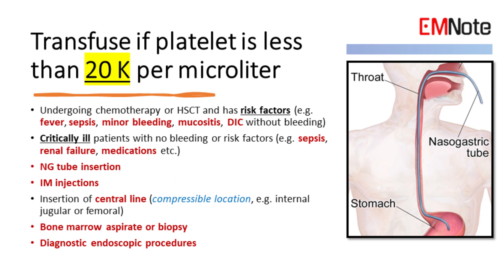Transfuse if platelet count is below 20,000 per microliter. This applies to patients undergoing chemotherapy or stem cell transplantation who have risk factors such as fever, sepsis, minor bleeding, or DIC without bleeding. Also for critically ill patients without bleeding or risk factors such as sepsis, renal failure, or medications.